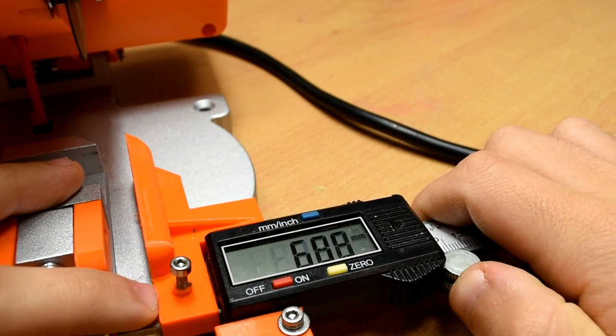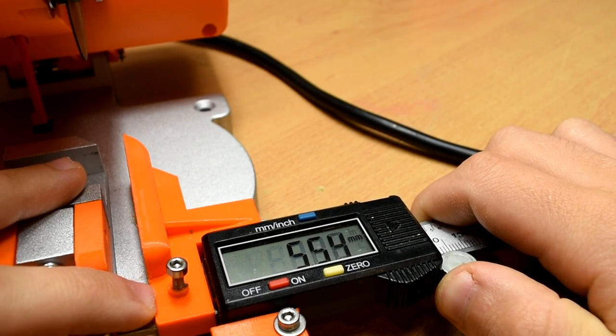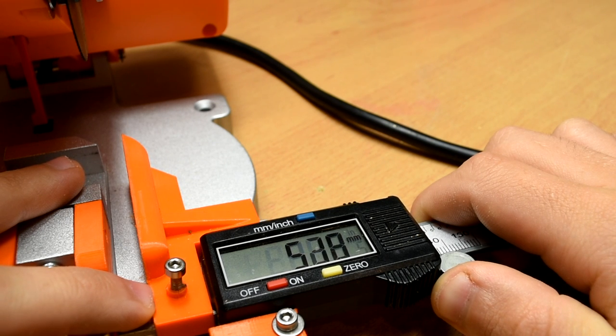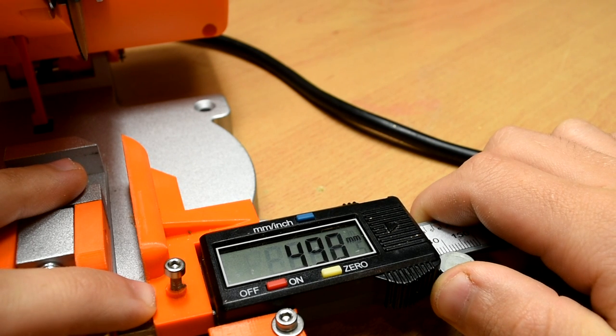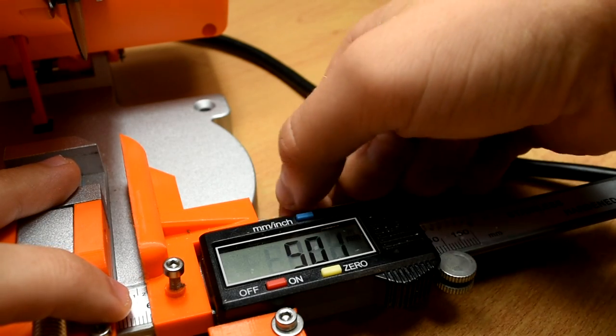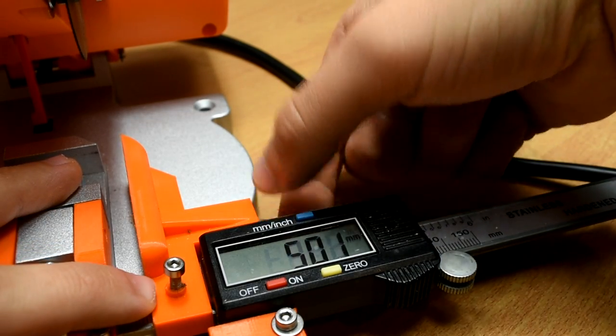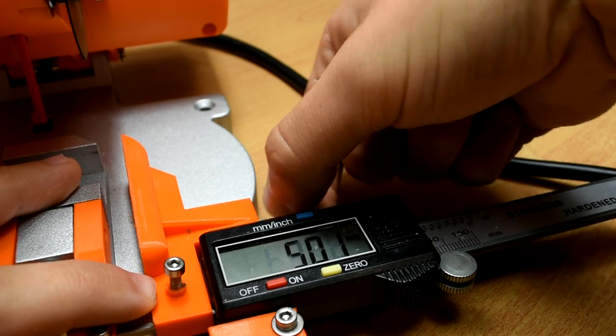For those that don't know, DRO just means digital readout, and they are used on things like lathes and mills to display various measurements. A DRO would be especially useful in this tool if you need a lot of the same sized piece, and I'll show some accuracy tests later on.